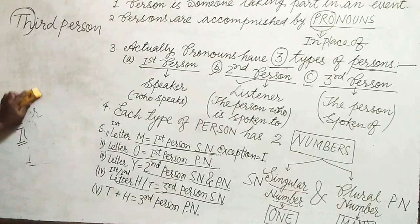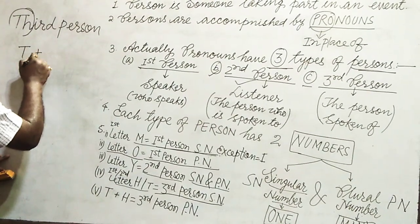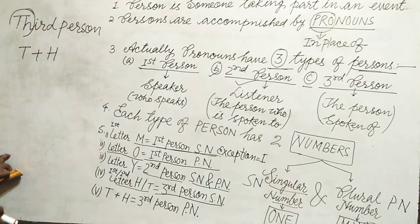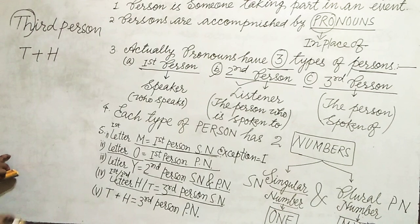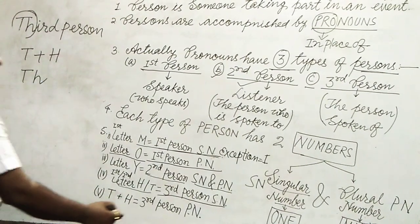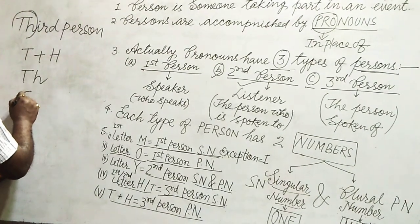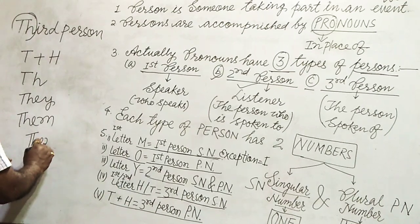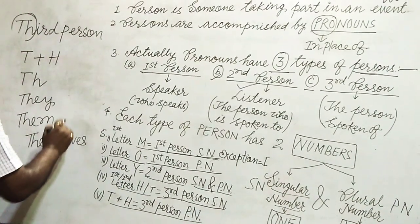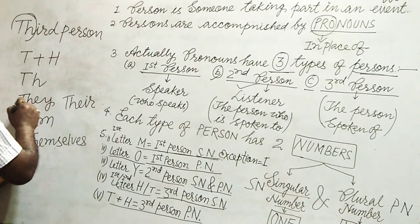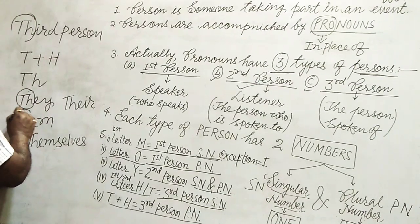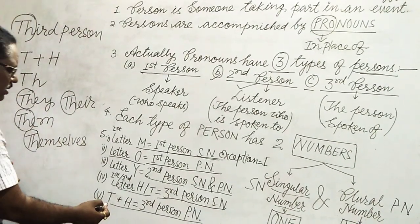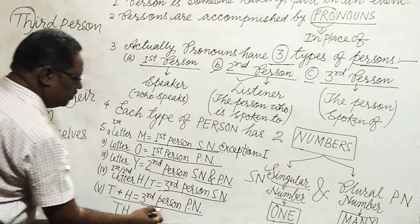Similarly, when T and H jointly come in pronouns, TH denotes third person plural number. Like: they, them, themselves, their — here TH comes jointly first. In this way, TH jointly denotes third person plural number.